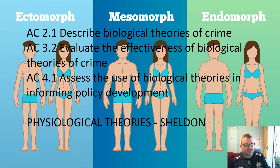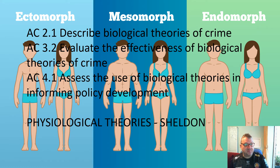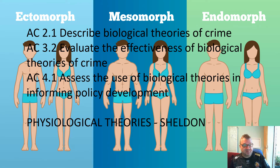We're now going to look at another physiological theory of crime. This comes under AC 2.1, describing biological theories of crime. I'm also going to bring in AC 3.2, which is to evaluate the theory, and AC 4.1, which looks at how the theory informs policy development. We've already looked at the physiological theory of Lombroso, and now we're going to look at the physiological theory of Sheldon.